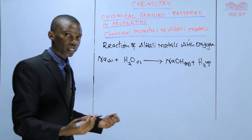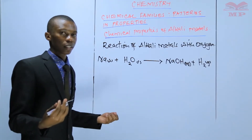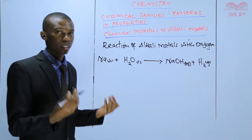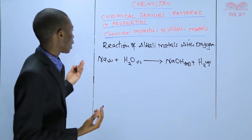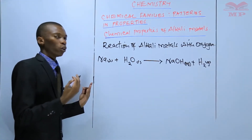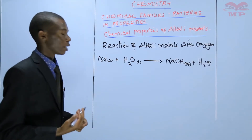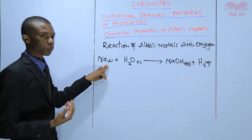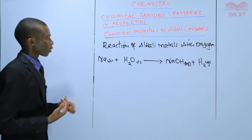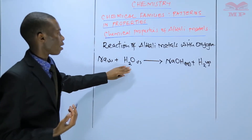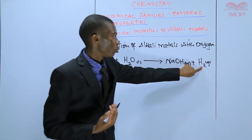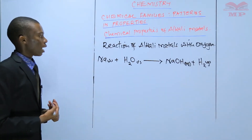Remember, a correct chemical equation is supposed to be balanced, the chemical symbols are supposed to be right, and physical states should be included. Our equation is not balanced, so you need to balance the number of atoms on both the reactant and the product side. On this side we have one sodium atom, and on this side we have one sodium atom, so the sodium atoms are balanced. Moving to hydrogen, we have two atoms of hydrogen on the reactant side, but on the product side we have one plus two, making them three. Therefore, hydrogen atoms are not balanced.